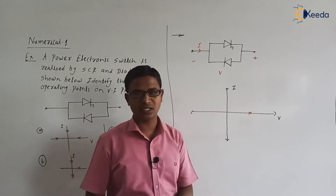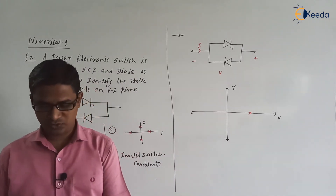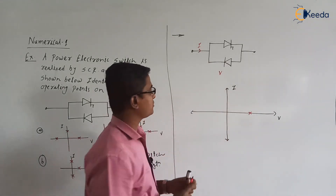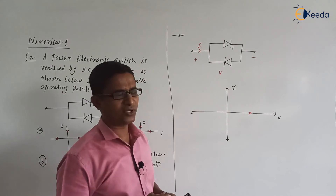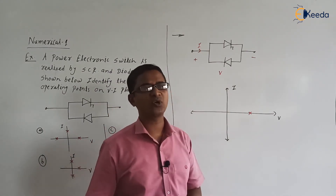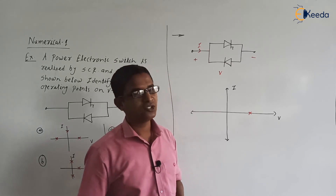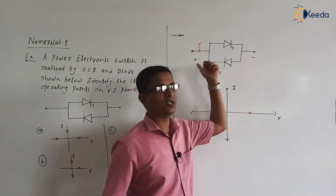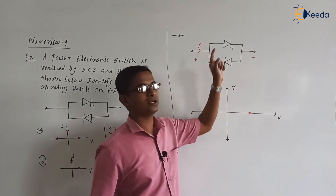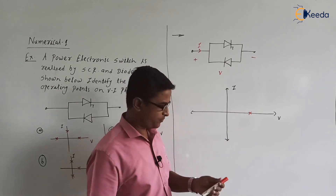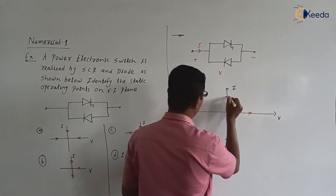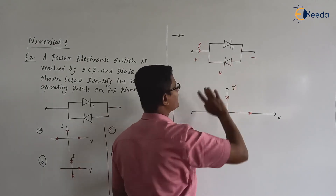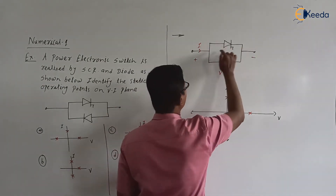Next, let us discuss unidirectional and bidirectional. During unidirectional/bidirectional analysis, we concentrate on the conduction mode. Suppose SCR is in the on state — whether SCR will allow the current in this direction, that is from left to right? Yes. SCR is allowing the forward current, that is the positive current. So the operating point will be at this location. The diode will not allow this reverse current, but the SCR will allow this positive current.